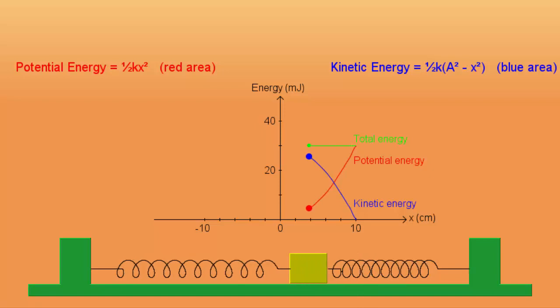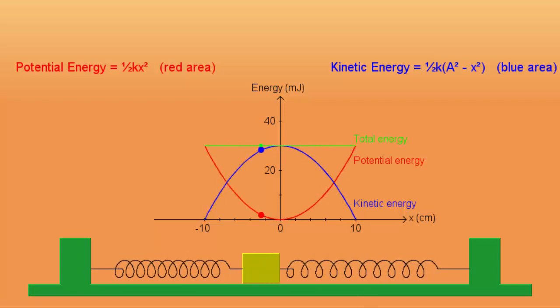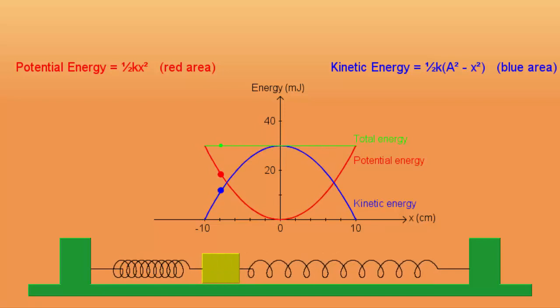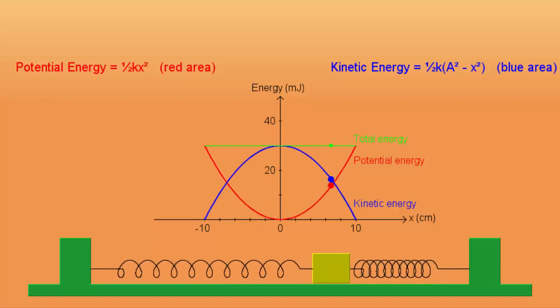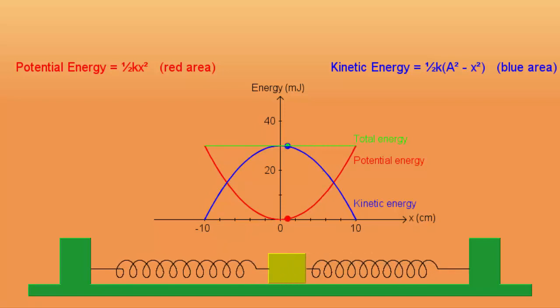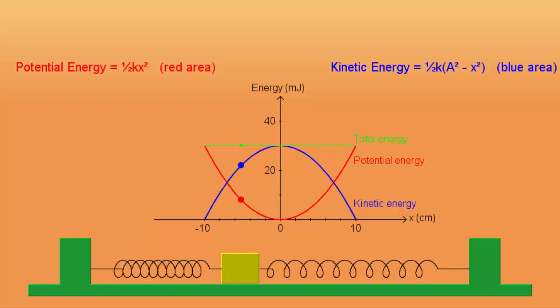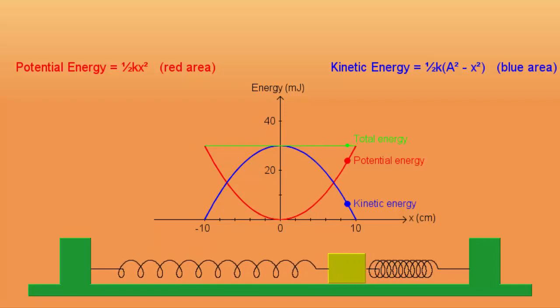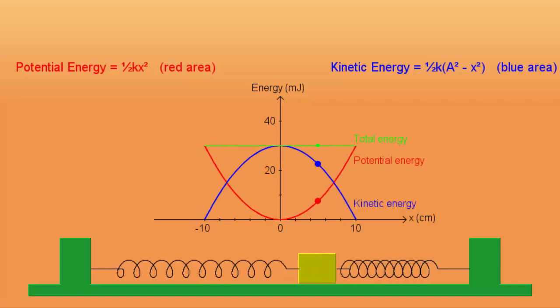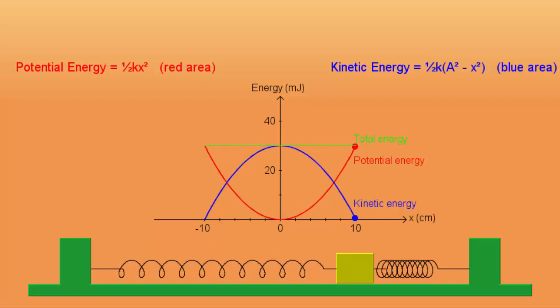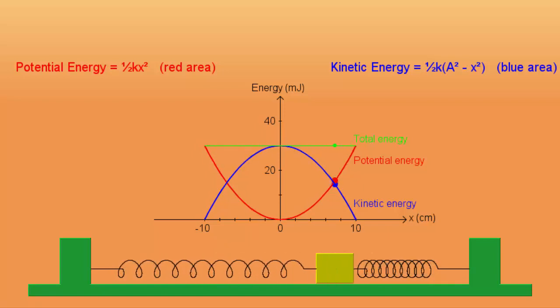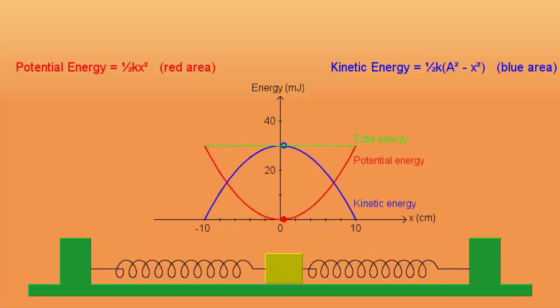When we let the mass go, the restoring force in both springs will cause the mass to move back towards its equilibrium position and start oscillating. In moving back to its equilibrium, it will accelerate due to the restoring force and will increase speed, thereby increasing its kinetic energy. From the graph of the energy of the mass, the kinetic energy is at its maximum when the mass is at its equilibrium position, where displacement is zero, so there is no potential energy. At equilibrium, the mass has its maximum velocity, so it has maximum kinetic energy.